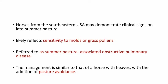Horses from the southeastern United States may demonstrate clinical signs on late summer pasture, likely reflecting sensitivity to molds or grass pollens. This is referred to as summer pasture-associated obstructive pulmonary disease. The management is similar to that of heaves, with the addition of pasture avoidance.